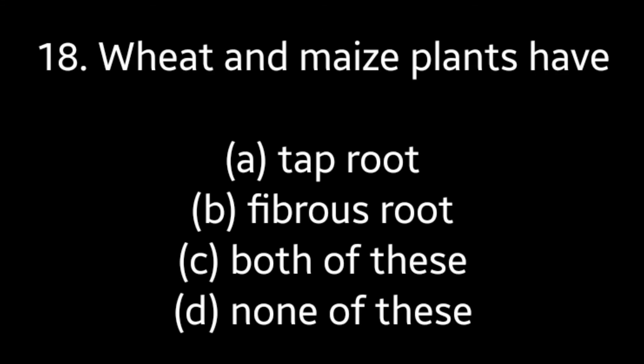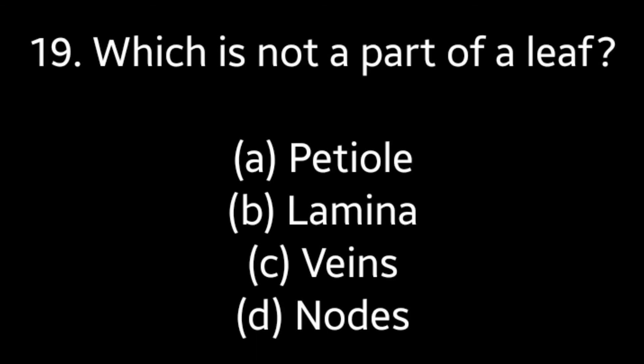Question number 18: Wheat and maize plants have Taproot, Fibrous root, Both of these, or None of these. Answer is option B, Fibrous root.